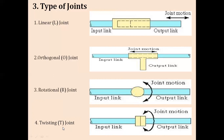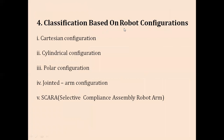Almost all robots use these types of joints for transforming motion from one side to another to perform particular tasks. Depending upon robot configurations, we classify robots into five types: the first is the Cartesian configuration, second is the cylindrical configuration, third is the polar configuration, fourth is the jointed arm configuration, and the last one is SCARA — Selective Compliance Assembly Robot Arm. In the next video we will discuss all these configurations in detail.